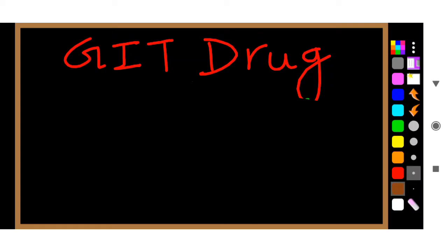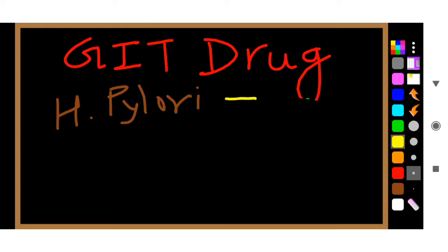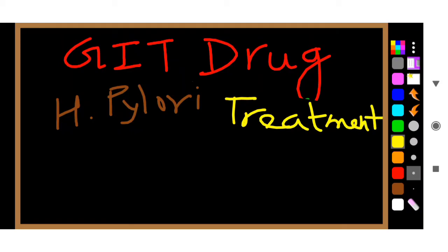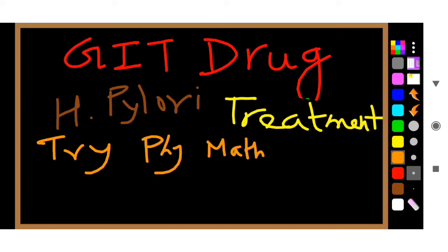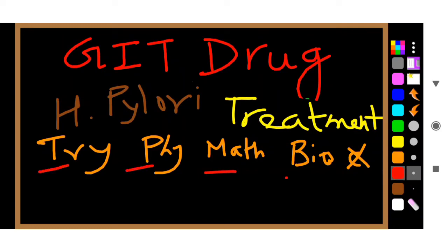The next mnemonic is for H. pylori treatment. H. pylori causes peptic ulcer. For H. pylori treatment, the mnemonic is 'Try PMB' — try Physics, Maths, Bio, but we have forgotten chemistry. So the formula is T-P-M-B: try physics, maths, bio — no chemistry.